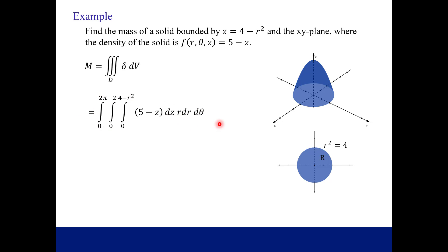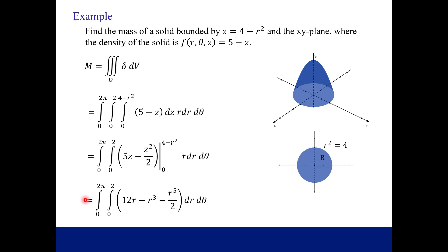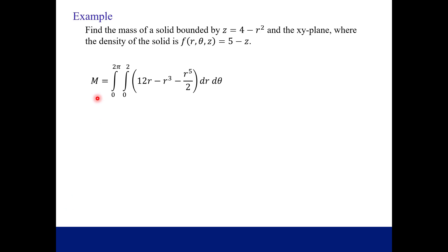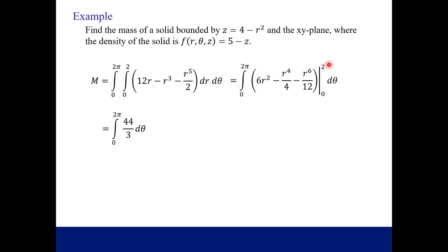Once we have the integral set up, we integrate one at a time. First with respect to z, using the power rule, and evaluate from 0 to 4 minus r squared. Plugging that in and simplifying — and distributing the extra r — we get terms with r, r cubed, and r to the fifth. Next we integrate with respect to r and evaluate from 0 to 2. Plugging those numbers in and simplifying, we get 44 over 3. Then for the outermost integral we integrate with respect to theta, and the final answer is 88π over 3 for the mass of our solid.